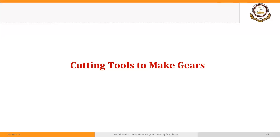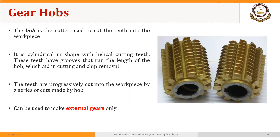Welcome back. Another example of multiple point cutting tools are the tools used to make gears. Gears can be made in a number of ways, using a number of manufacturing processes. Generally, for mass production or making gears in larger quantities, we use machining. And in machining, we have multiple options, and one of them is gear hobbing.